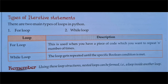There are two main types of loops or iterative statements in Python. First is the for loop, which is used when you have a piece of code you want to repeat n number of times. Second is the while loop, which repeats until a specific boolean condition is met. The while loop will execute as long as the boolean condition is true, and terminate when it becomes false.